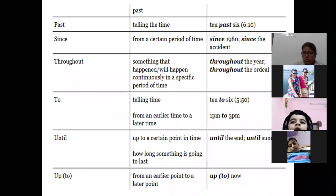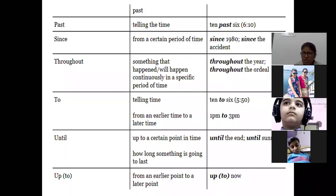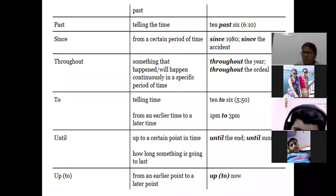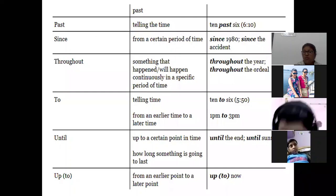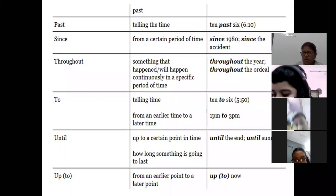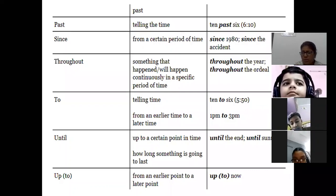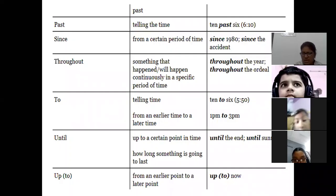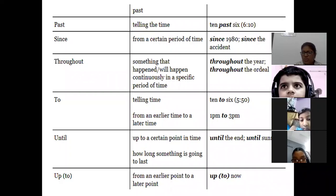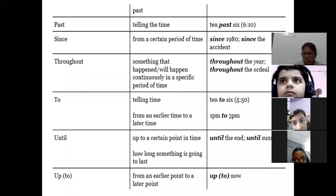'To' is used when telling time: 10 to 6 means 10 minutes are left to 6. When you want to say from an earlier time to a later one: I study from 1 pm to 3 pm. 'Until' means up to a certain point in time: until the end. 'Up' goes from an earlier point to a later point.